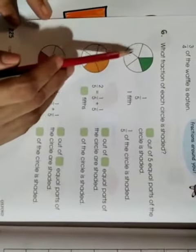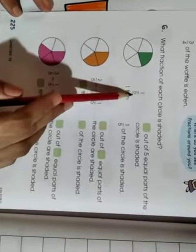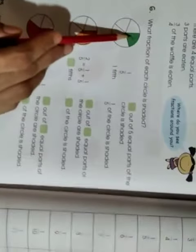First, count how many parts there are total. It is one, two, three, four, five. So it is written as one upon five. It means one part is shaded, so you will write one out of five equal parts of the circle is shaded.